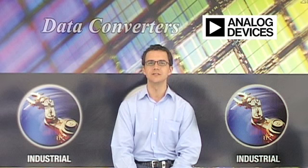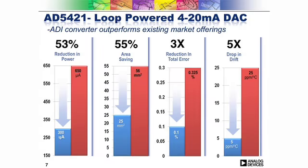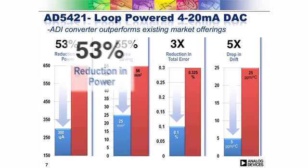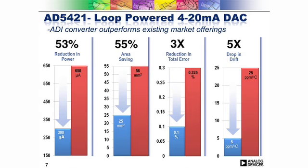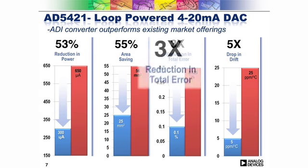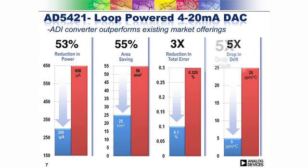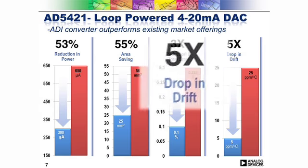There are a number of key performance features that will help differentiate any transmitter system, namely power, accuracy, drift and package size. As the slide illustrates, the new AD5421 excels in all of these areas, offering a 53% reduction in power and a 55% space saving over competing solutions. These savings are combined with a 3-fold improvement in total unadjusted error and a 5x improvement in offset drift.